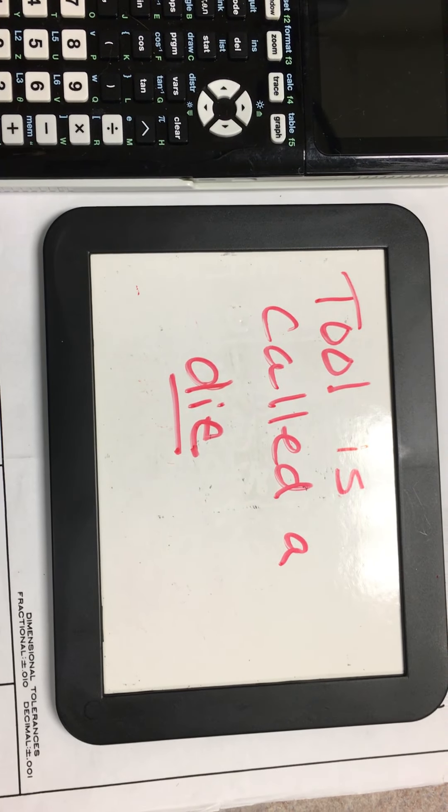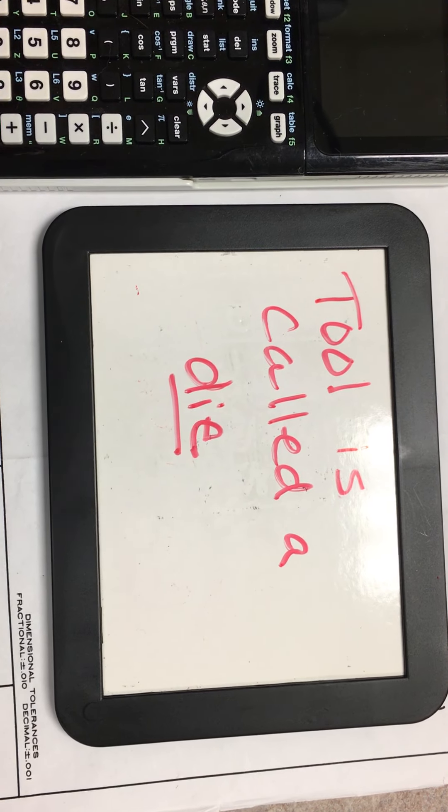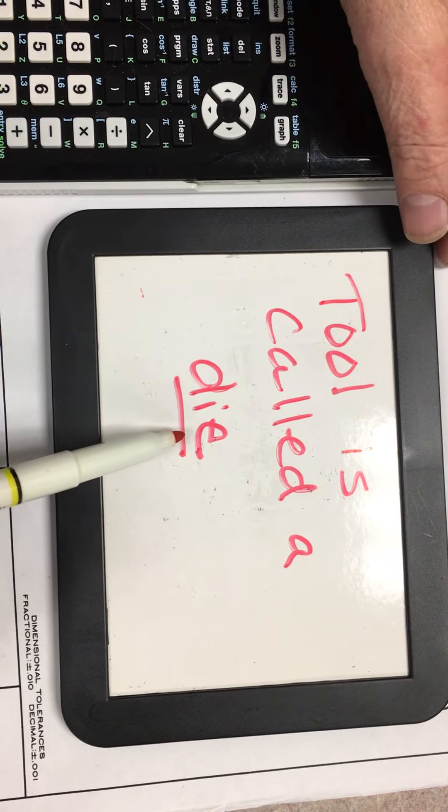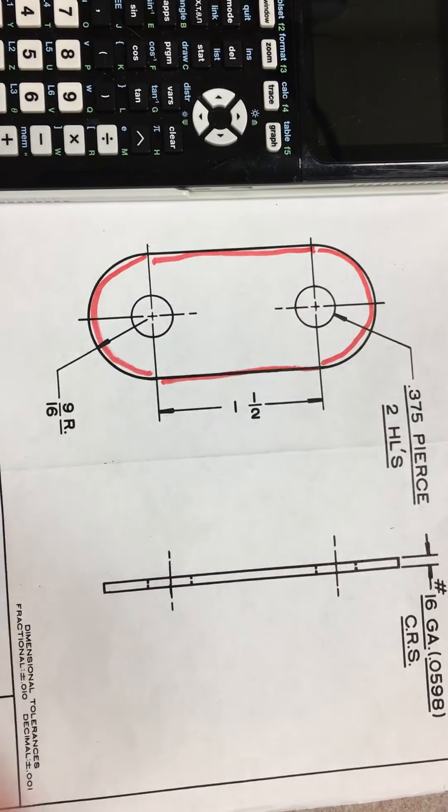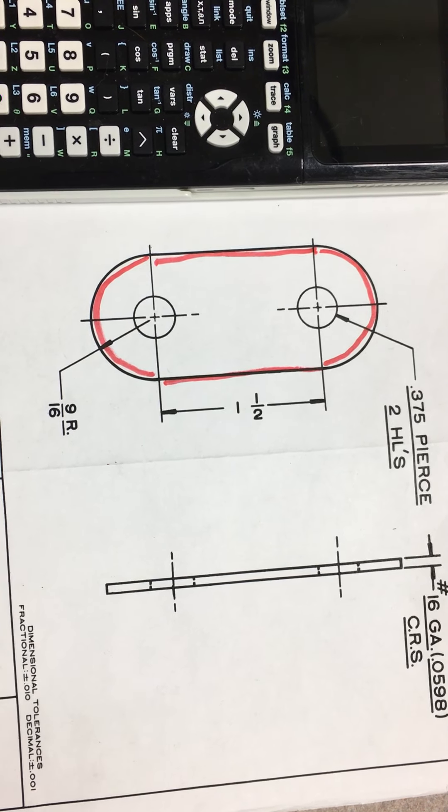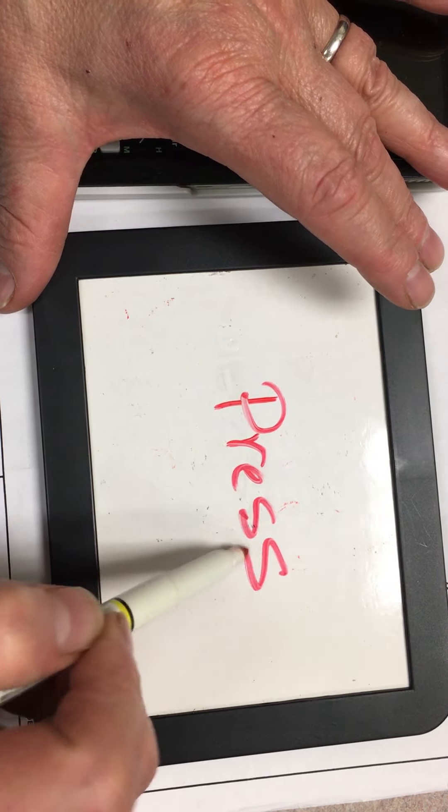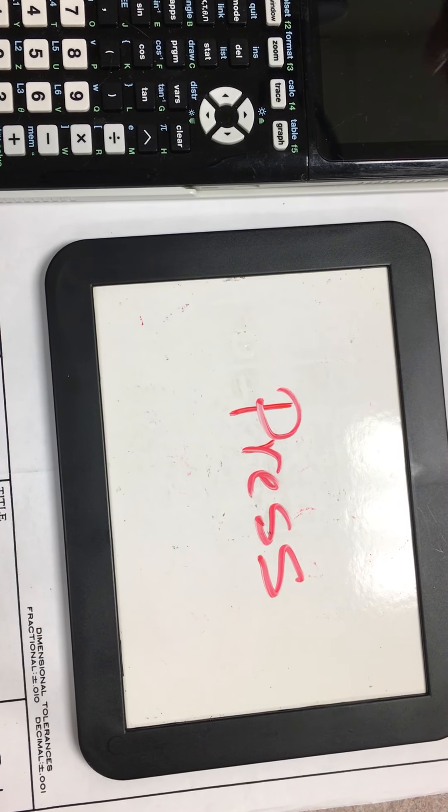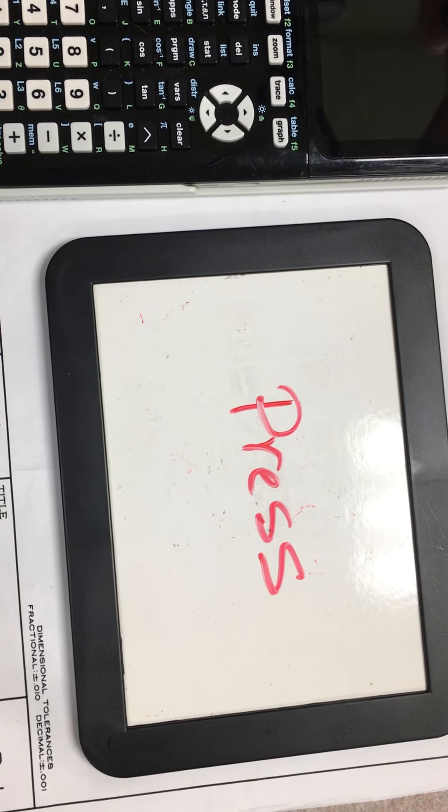Today we're going to talk about the last tool that we will discuss in our manufacturing processes class. This tool is called a die. A die is a tool that's used in a machine called a press. We have a variety of presses. We have a stamping press which is the main one that is employed in this area.